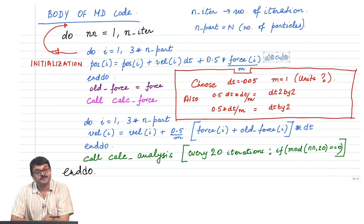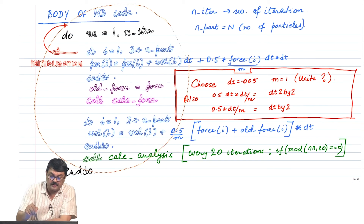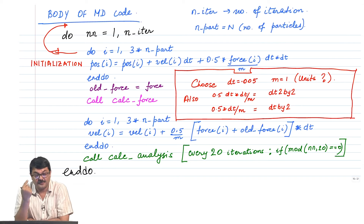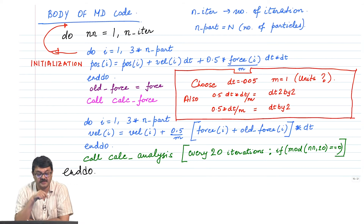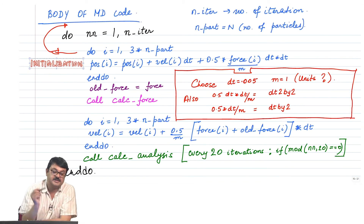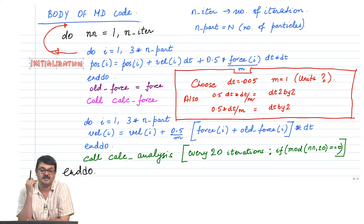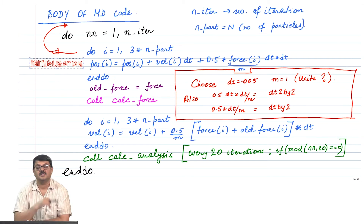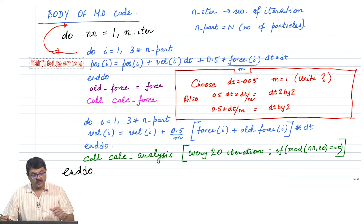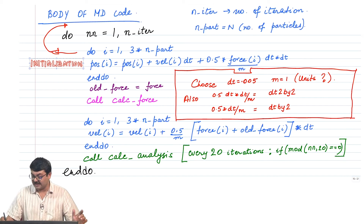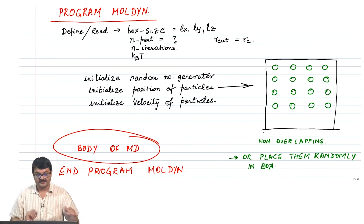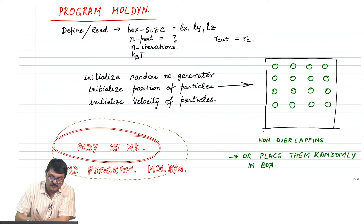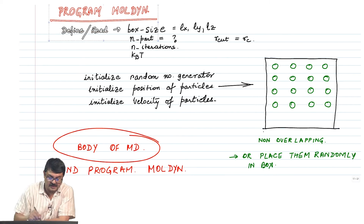The other thing is: even before we go to the body of the MD code, when n equals 1 — the first iteration — you need the velocity of the particles, the force on the particles, and the position of the particles. What we have not discussed is initialization: how do we initialize the positions, velocities, and forces. If you know the positions, you can calculate the forces because force depends on the distance between particles. So before the body of the MD code, we need to discuss initialization.